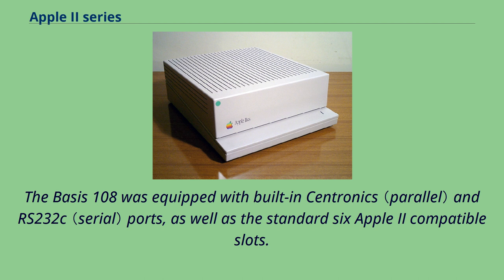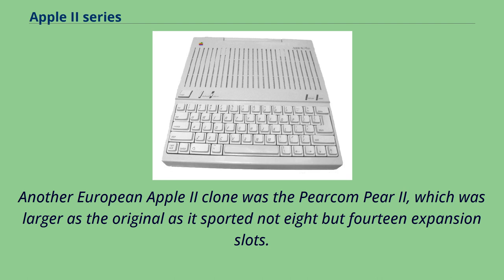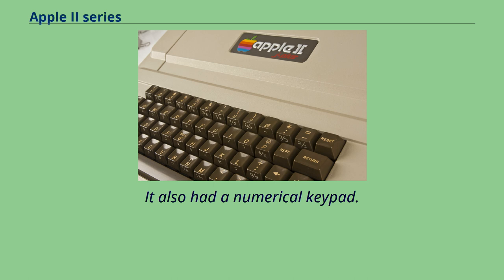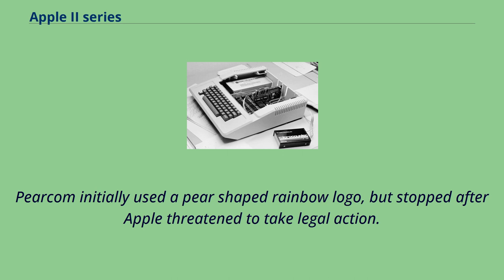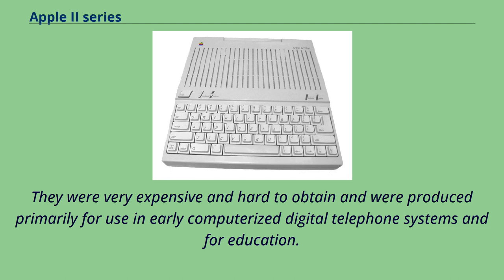Unlike the Apple II, the Basis 108 came with a detached full-stroke keyboard of 100 keys plus 15 function keys and separate numeric and editing keypads. Another European clone was the Pearcom Pear 2, which sported not 8 but 14 expansion slots and also had a numerical keypad. Pearcom initially used a pear-shaped rainbow logo but stopped after Apple threatened legal action. A Bosnian company named Iris Computers produced Apple II clones starting in the early 1980s under the brand name Iris 8, used primarily in computerized digital telephone systems, education, offices of state companies, R&D labs, and the Yugoslav army.